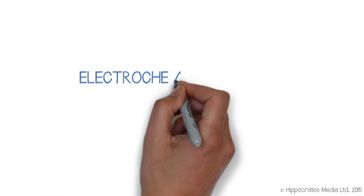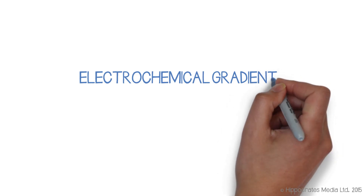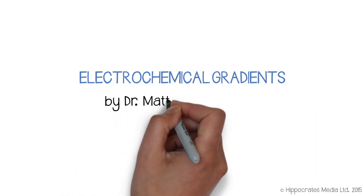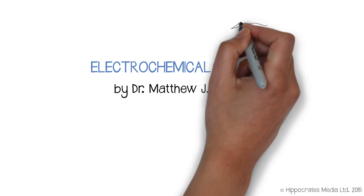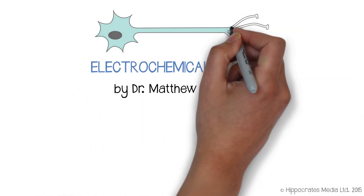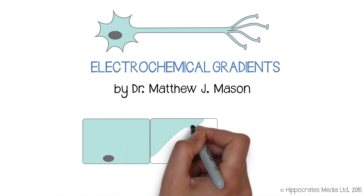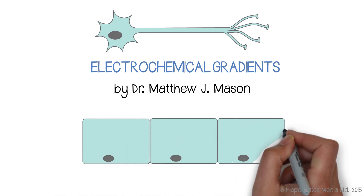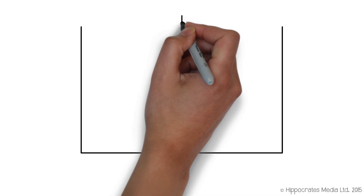I'm going to talk now about electrochemical gradients, which are a very important concept when it comes to the physiology of all cells. People often associate electrochemical gradients just with nerve cells, but electrochemical gradients are important for the functioning of any cell in the body. Nerve cells represent a special case which can use the energy in these gradients to power action potentials — we'll come to that a little bit later.